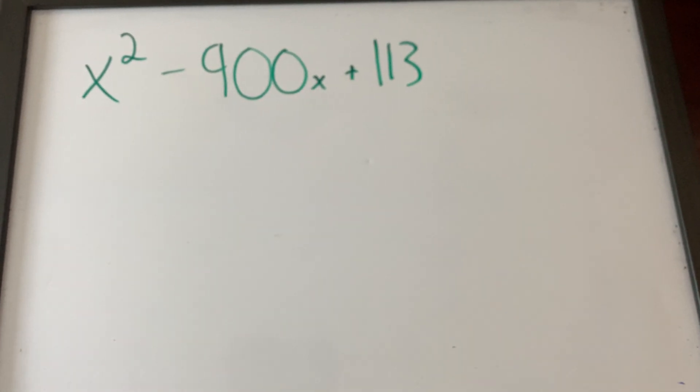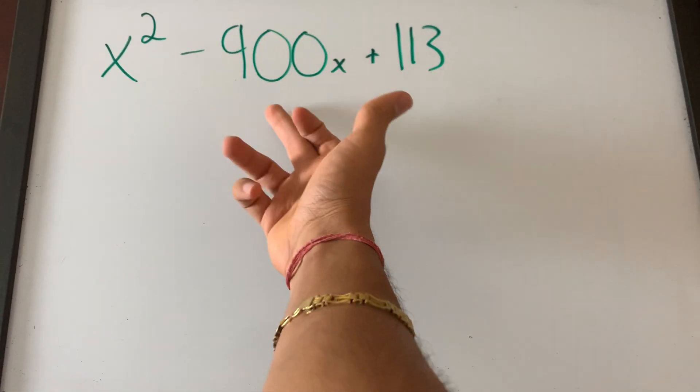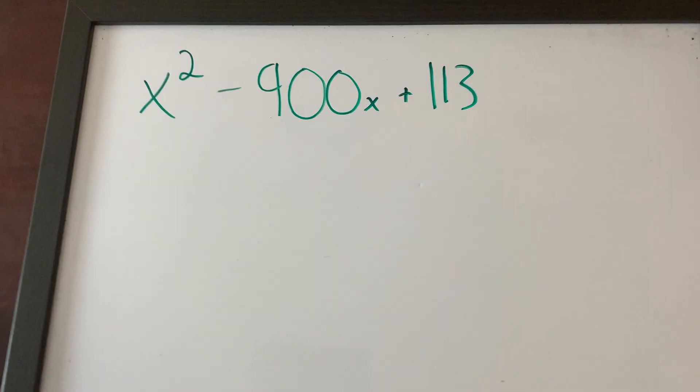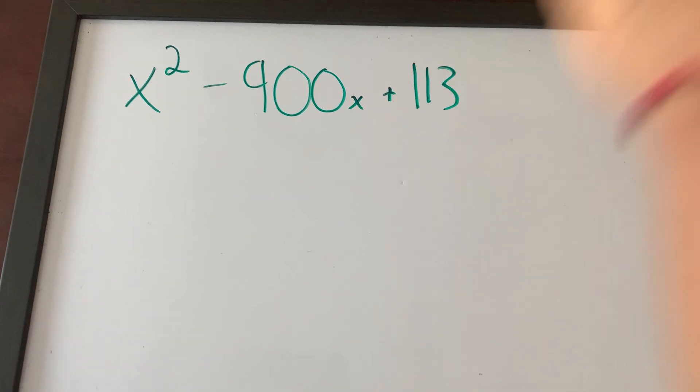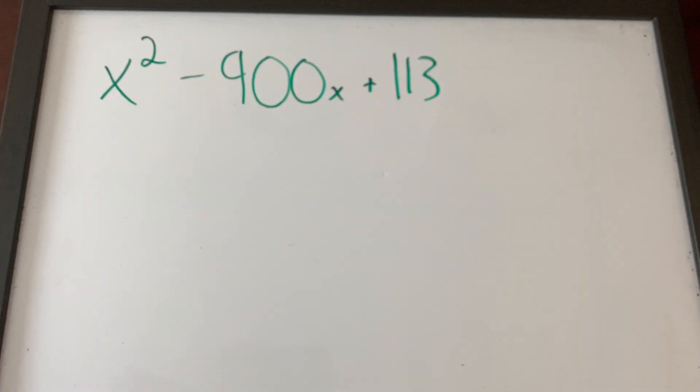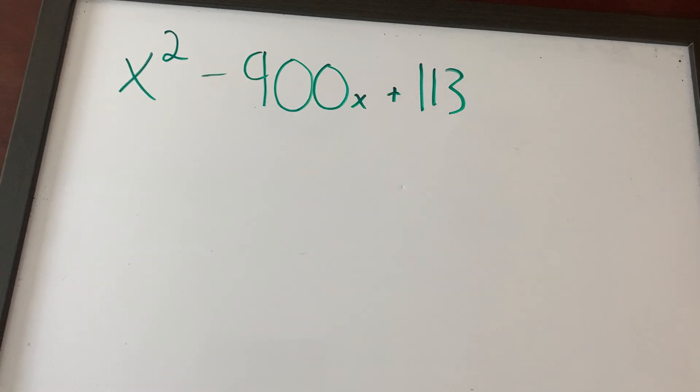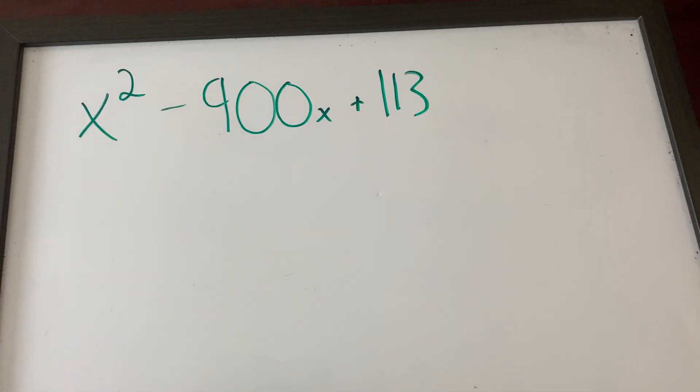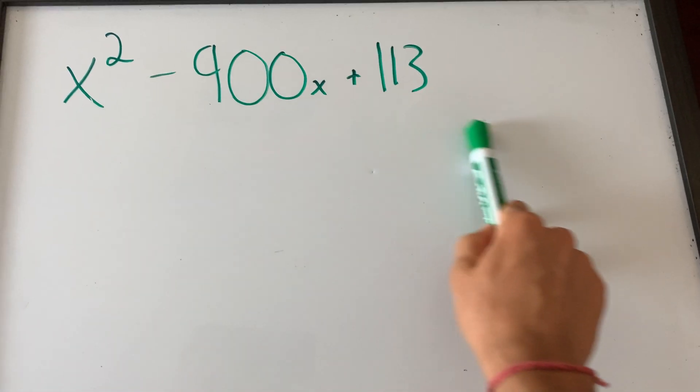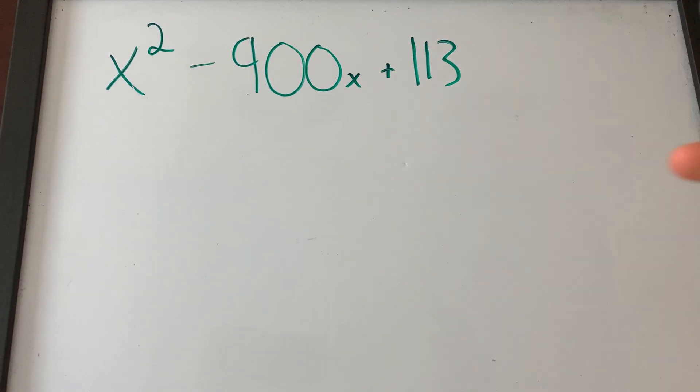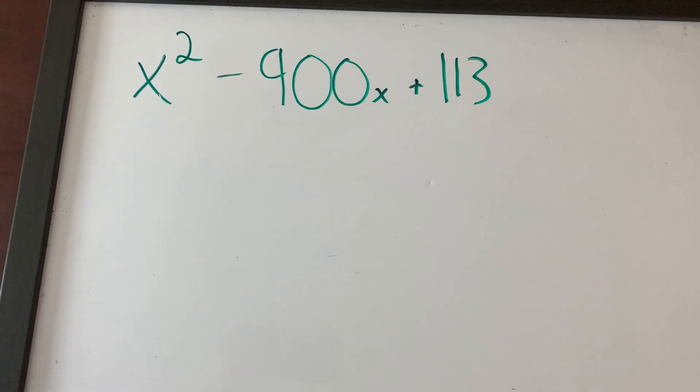So when you see this equation, right, you're automatically looking at this minus 900. You're like, alright, do I have to factor this? Because 113, 900, this would be almost impossible to factor. Let me tell you guys, when you see any type of parabola like this with these weird numbers, they will most likely ask you one simple question.